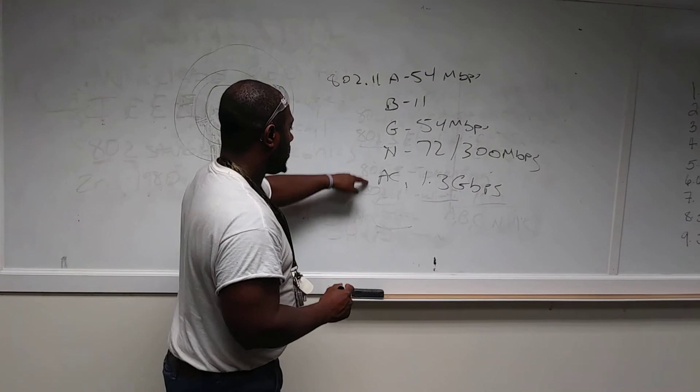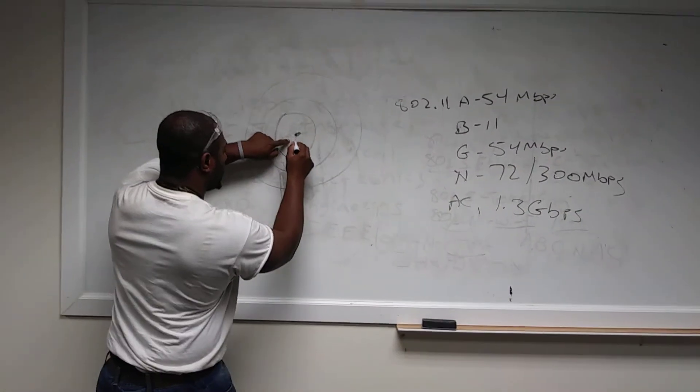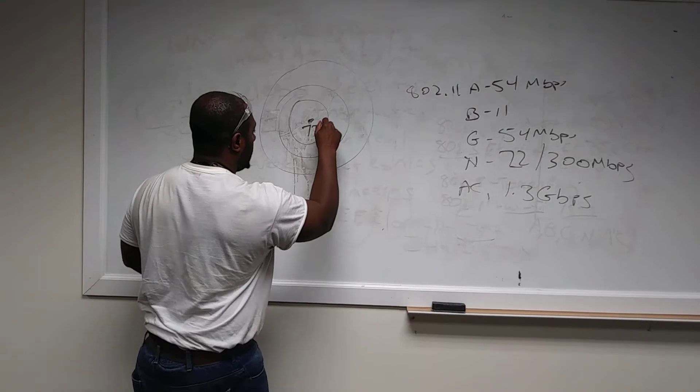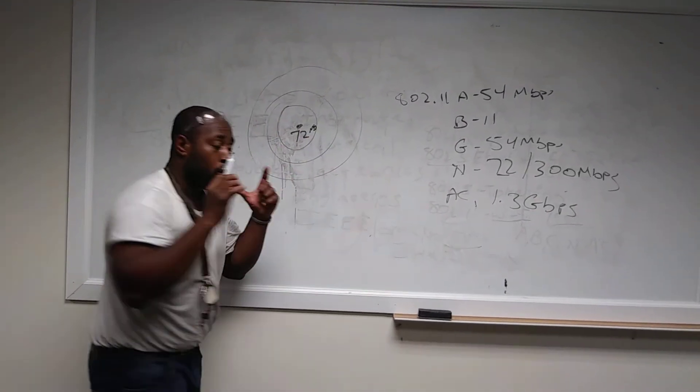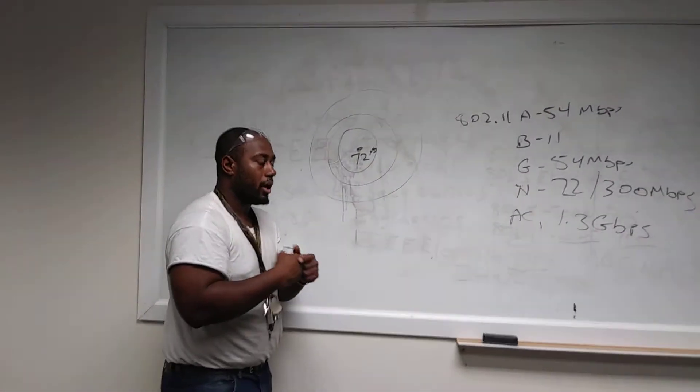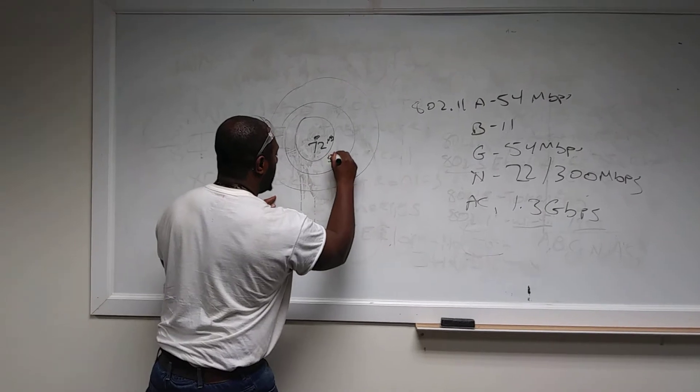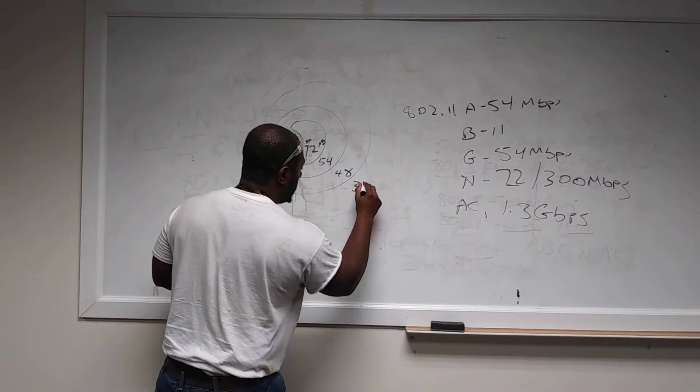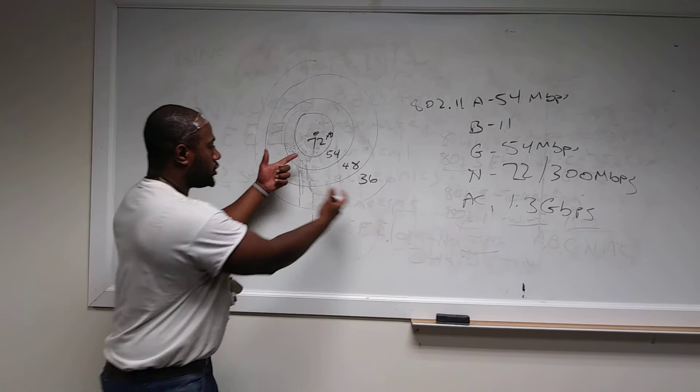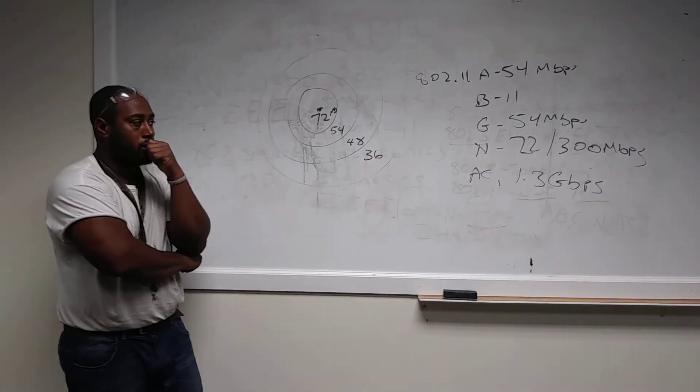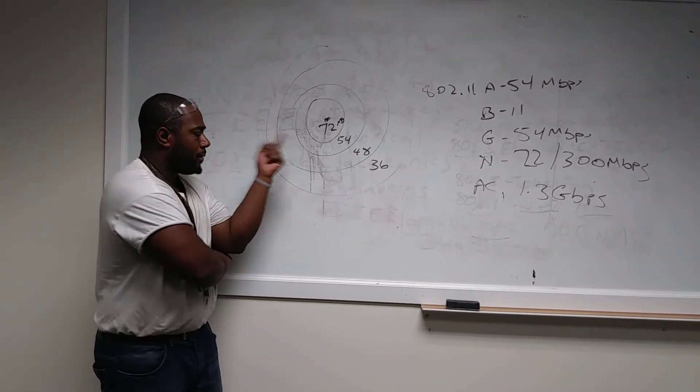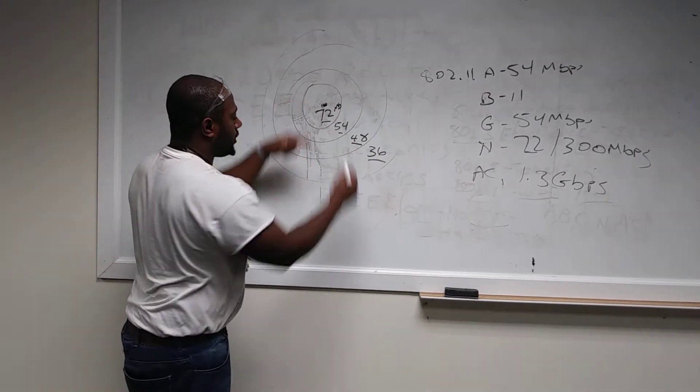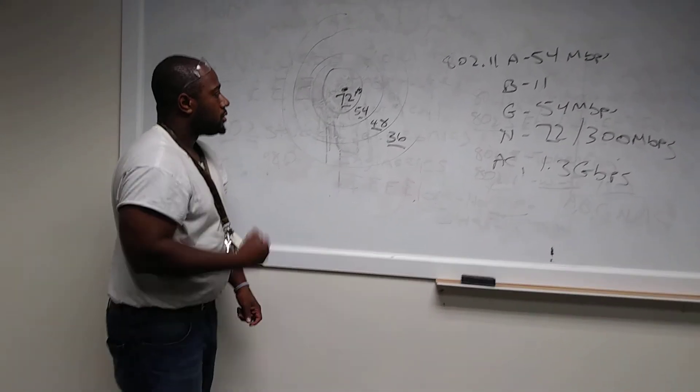Hypothetically speaking, if you have a router that's right here and it's running 802.11n, the closer you are to here, you will have 72 megabits per second. When you get farther away, though I do not know the exact numbers and I will do my research, but when you go farther away, the concept is it'll go 72, 54, let's say 48 right here, let's say 36 right here. It'll degrade when it gets farther away from the center of the access point.